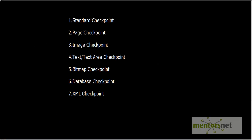There are different types of checkpoints in QTP. Standard checkpoints are applied on objects like edit boxes, list boxes, radio buttons, web checkboxes, buttons, links, images, and pages. The page checkpoint is applied on the page if you want to verify the number of images, the load time, and the number of links appearing on the page. The image checkpoint is used to verify properties of an image like the source file, associated text, and location.